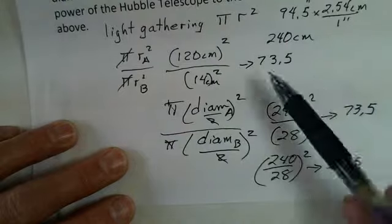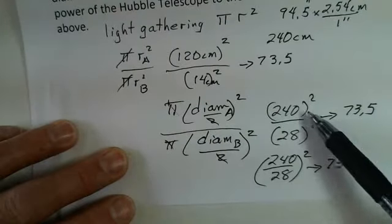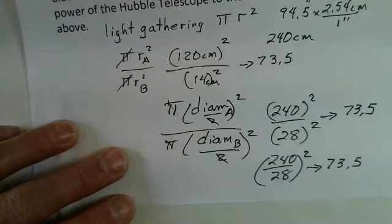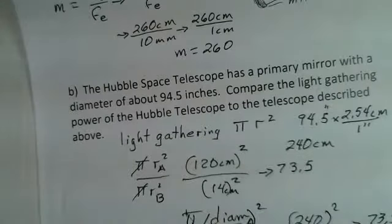Three ways to work this problem: use πr² with radius, square the diameters and divide, or divide the diameters then square. Any method gives you the light gathering capability comparison for two telescopes. Ask your instructor if you have questions.